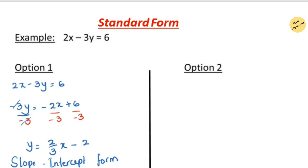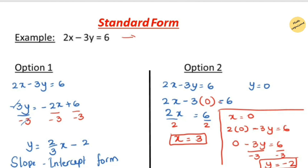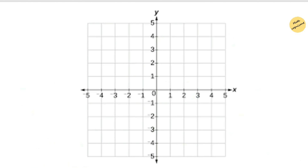To find the intercepts, we take two cases. First, when y equals 0 and substitute into the equation, we get x equals 3. Second, when x equals 0, we find y equals negative 2. This gives us two points: (0, negative 2) and (3, 0).